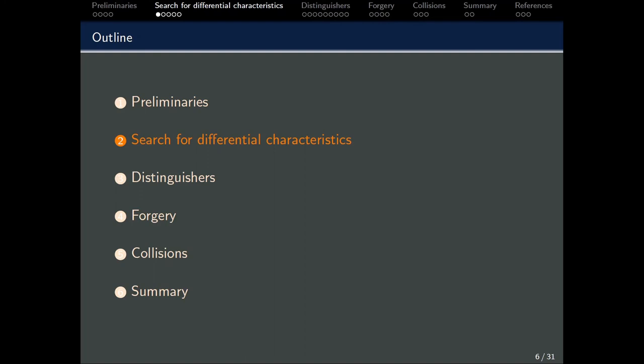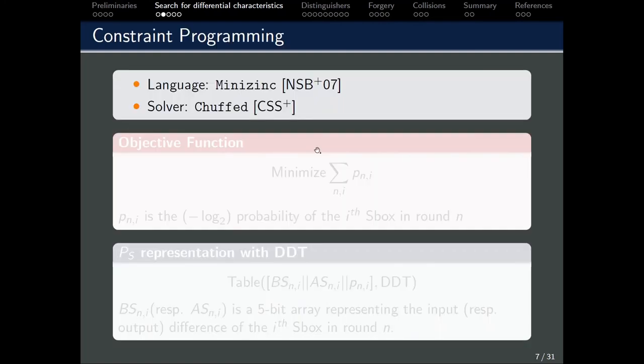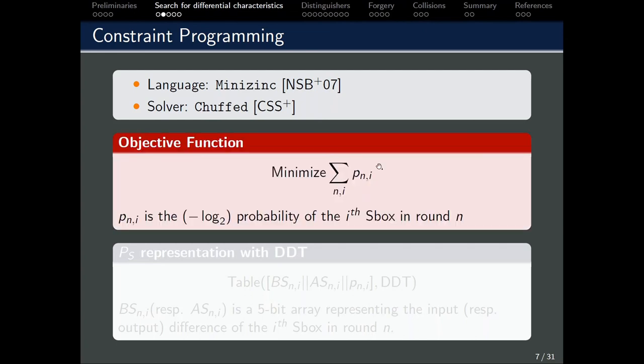We will now move on to the search for the differential characteristics of ASCON. In this work, we are using the MiniZinc language and CHOCO solver for our CP program. And the objective function is to minimize the minus-log2 probabilities.